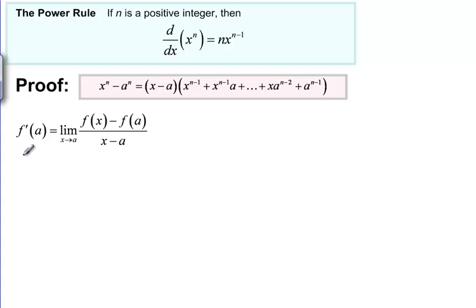So if we look at the limit as X goes to A, F of X minus F of A over X minus A, that's one of the definitions of the derivative at the point A.